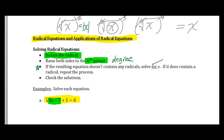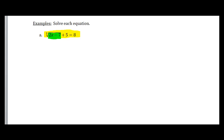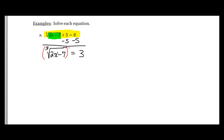Let's look at the first example: the cube root of (2x minus 7) plus 5 equals 8. The first step is to isolate the radical. The only thing preventing isolation is the plus 5 on the outside, so I subtract 5 from both sides. That gives me the cube root of (2x minus 7) equals 3. Now the radical is isolated, so I raise both sides to the third power — the index is 3. The cube root and the third power cancel, leaving 2x minus 7 equals 27.